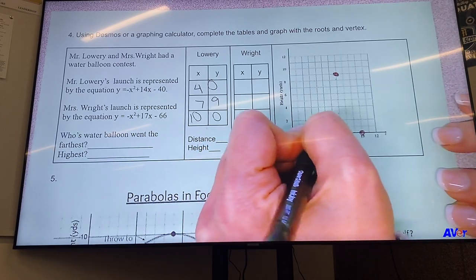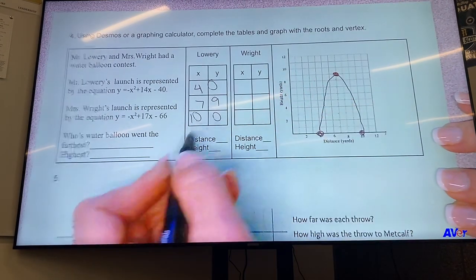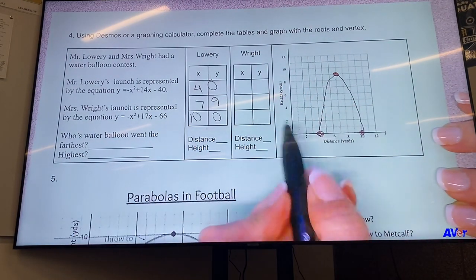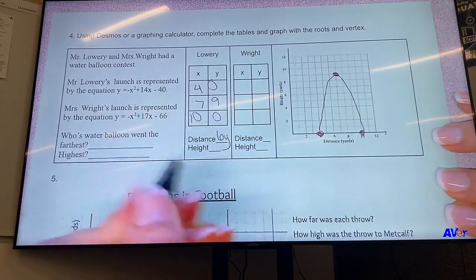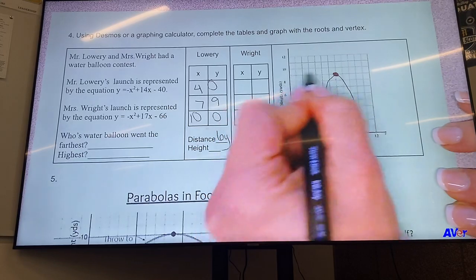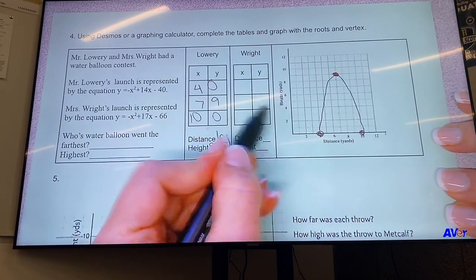Okay, so the distance is from 4 to 10, so the distance his balloon was 6 yards. The height, the tallest height it went, was 9 yards. And then our other parabola had roots at (6, 0) and (11, 0).